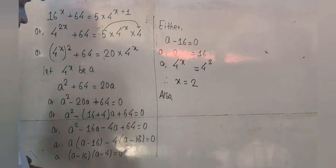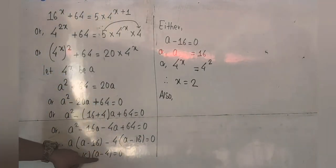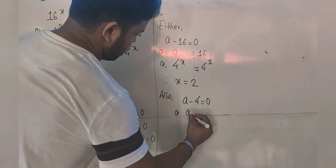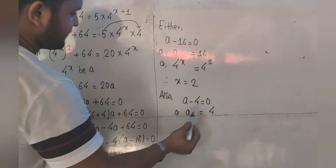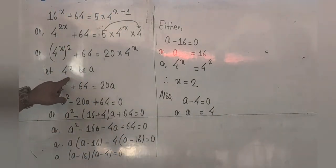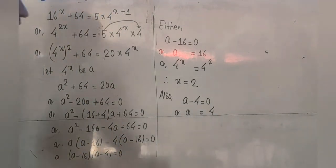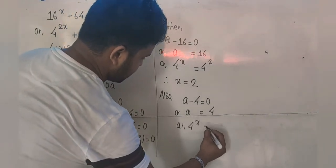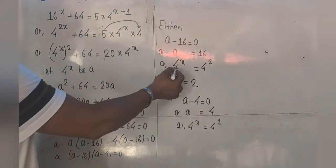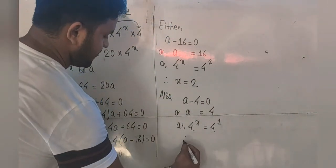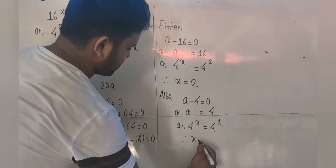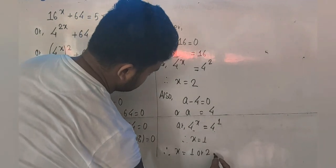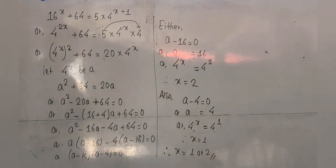The next option is a minus 4 equals 0, which gives a equals 4. Since 4 power x is supposed to be a, in place of a I write 4 with the power x, and this equals 4 with the power 1. The bases are the same and there is an equal sign in between, so the exponents are also equal. Therefore x equals 1. So the value of x is 1 or 2.